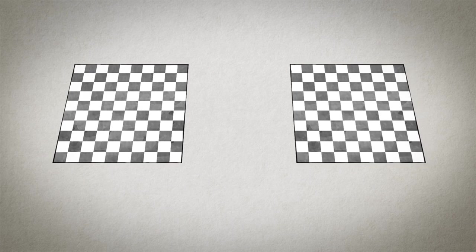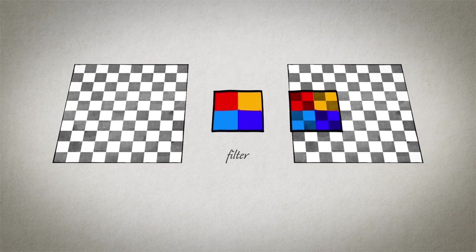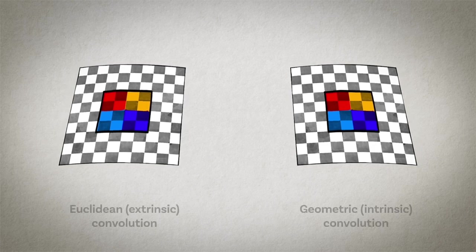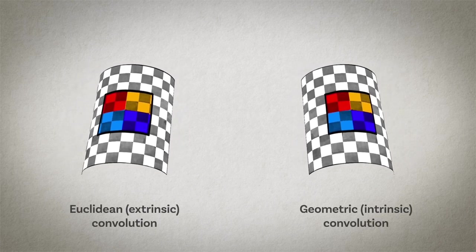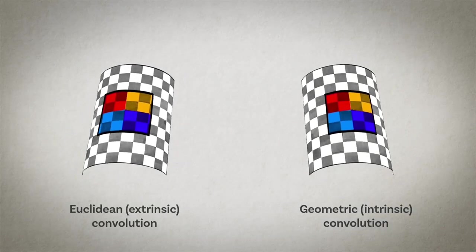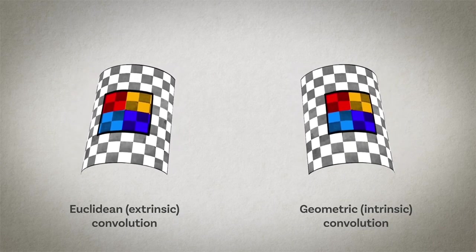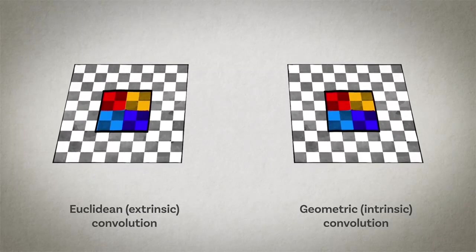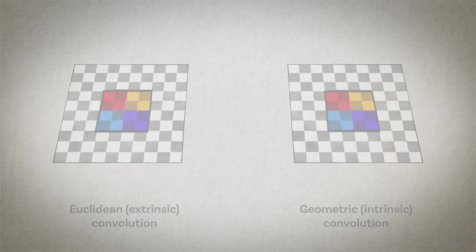The reason why we care about manifolds is that in computer vision and graphics, two-dimensional manifolds or discrete surfaces, meshes, are a standard way of modeling 3D objects. What we gain from our geometric perspective is filters that can be defined intrinsically on the object, and this equips our deep learning architecture with invariance under inelastic deformations.